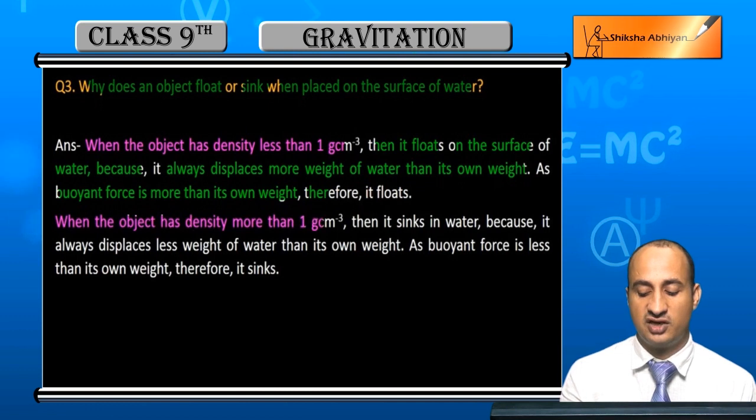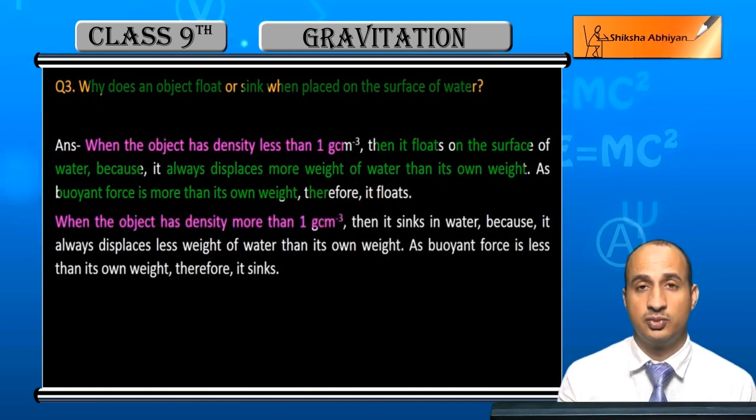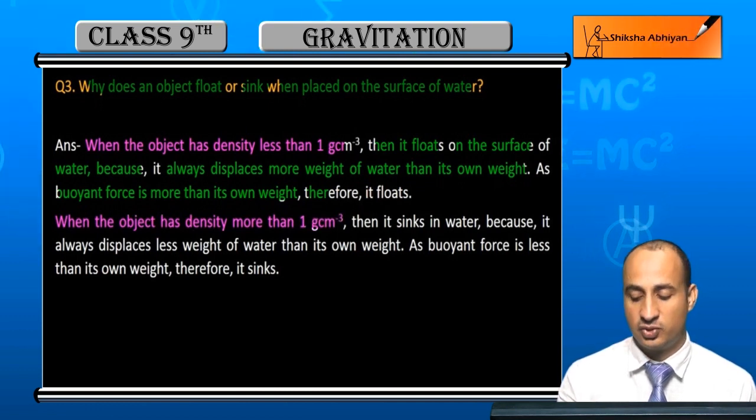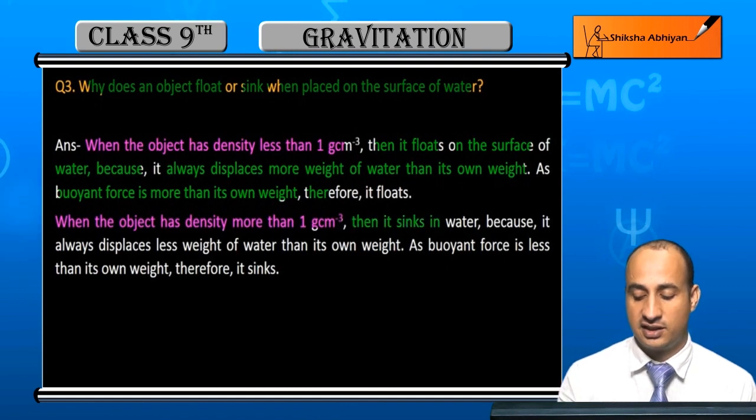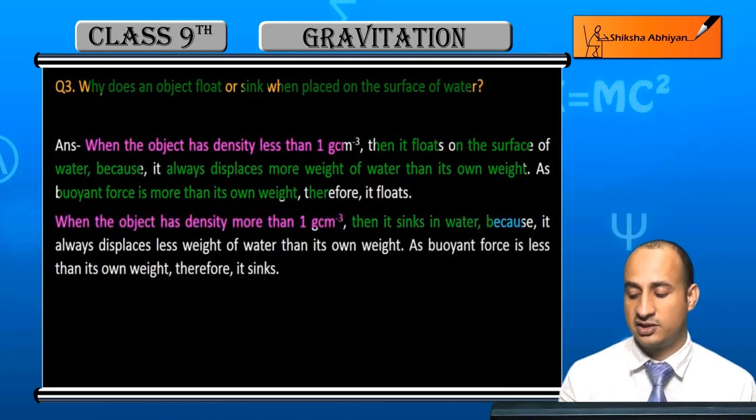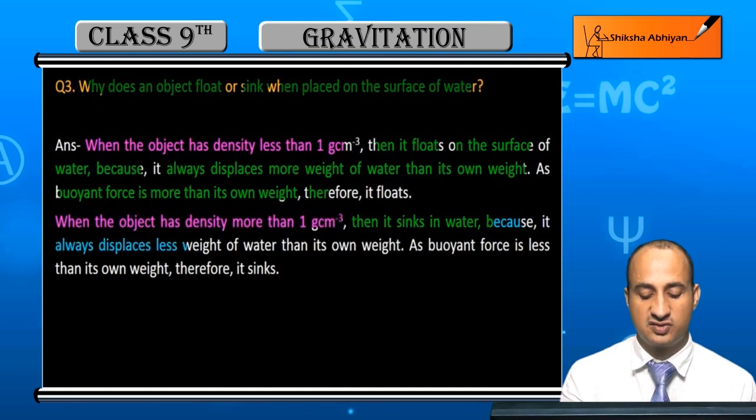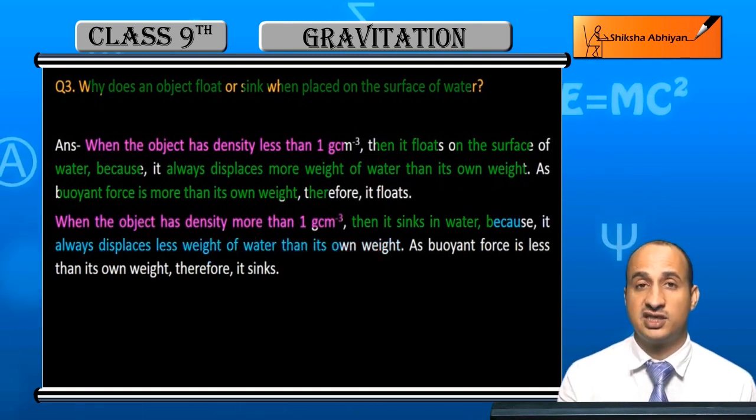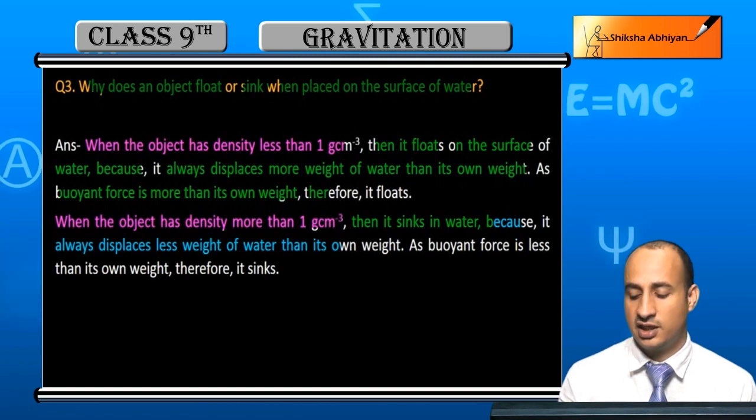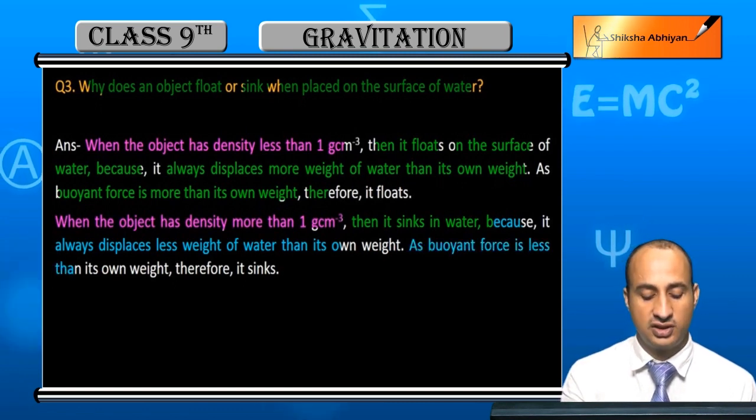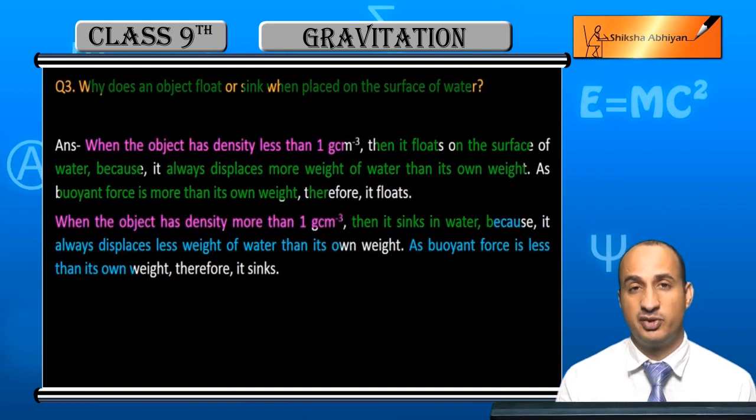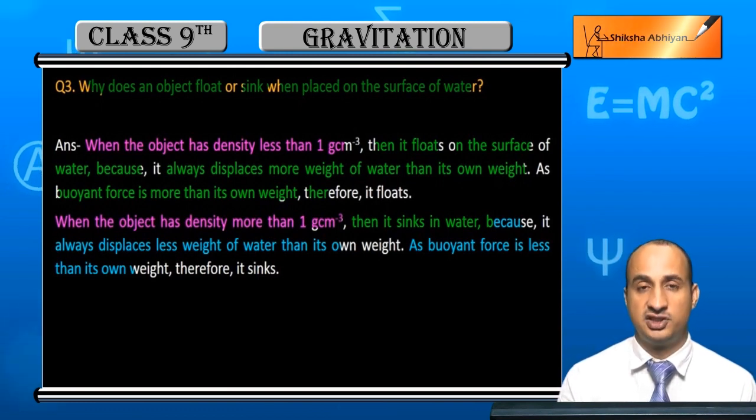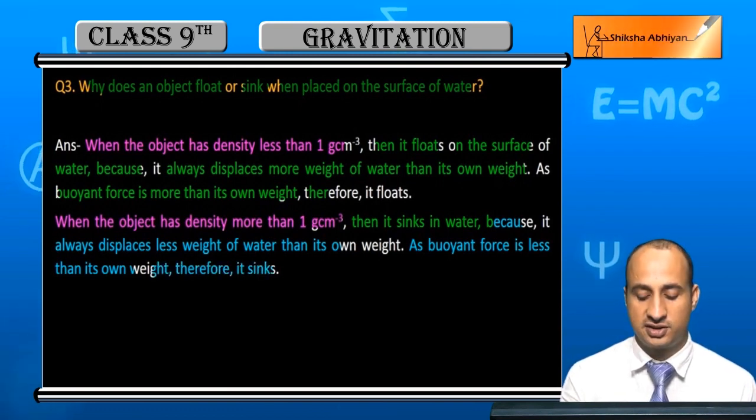Now student, when the object has density more than 1 gram per cubic centimeter, that is more than water's density, then in this case it sinks in water. Why? Because it always displaces less weight of water than its own weight. The buoyant force is less than its own weight, therefore it sinks.